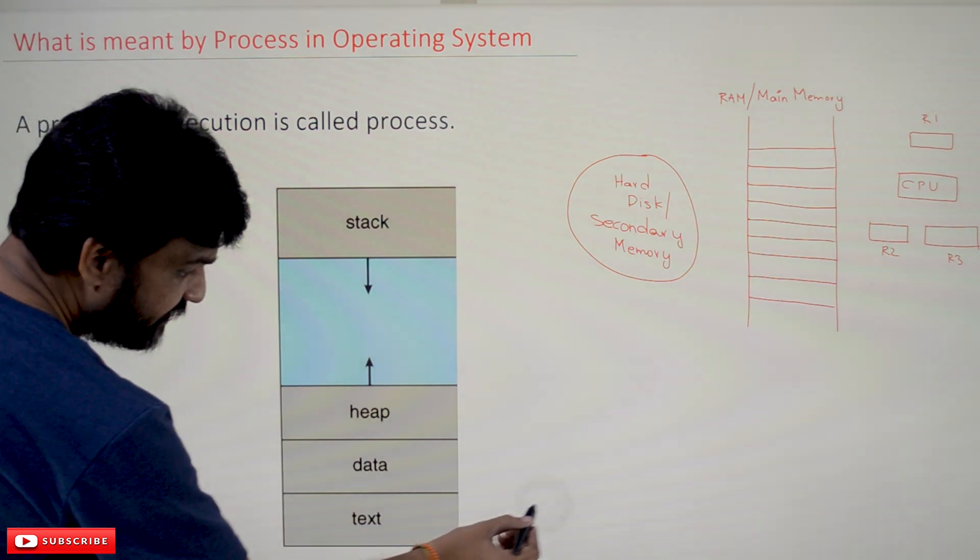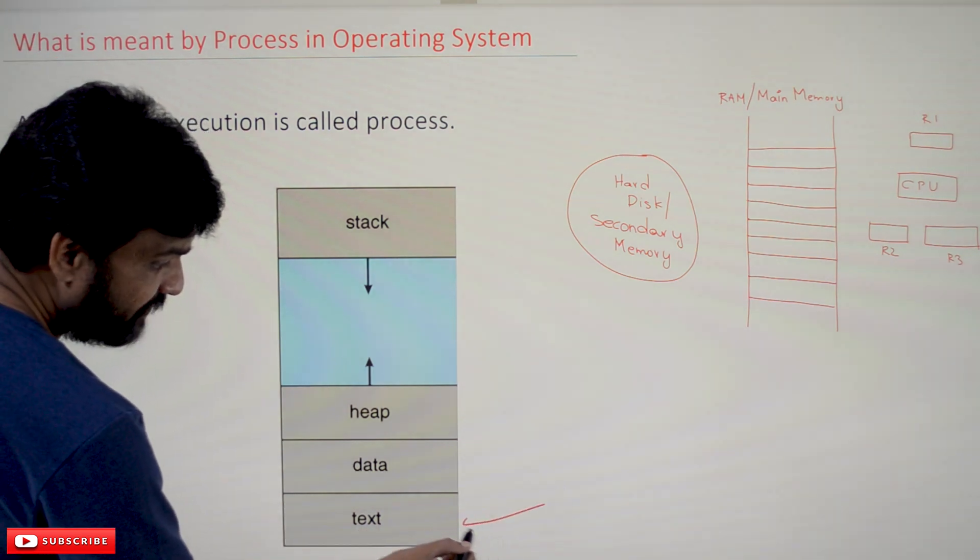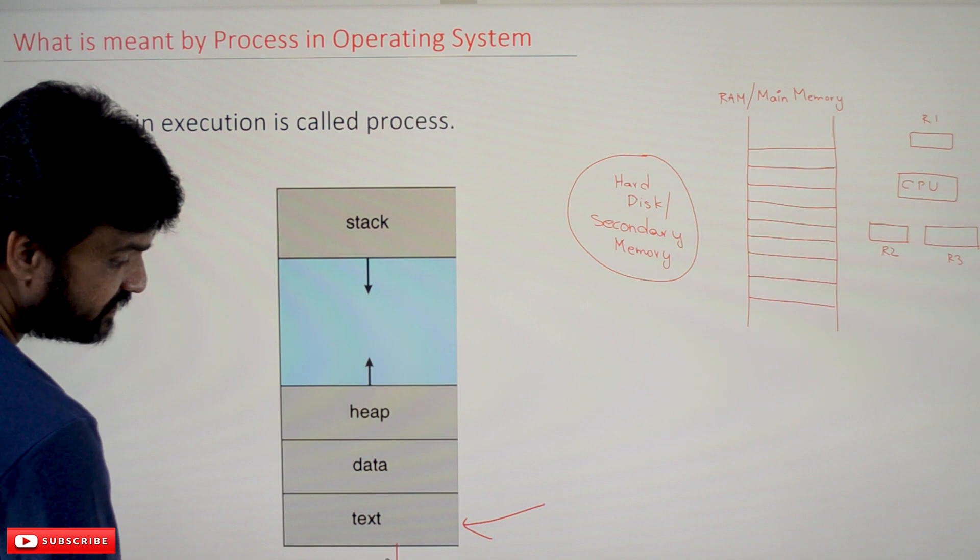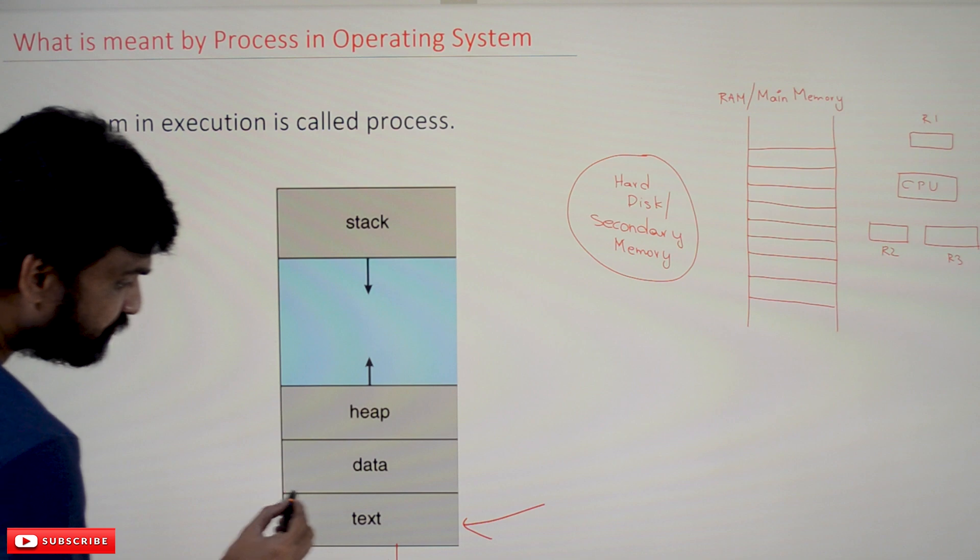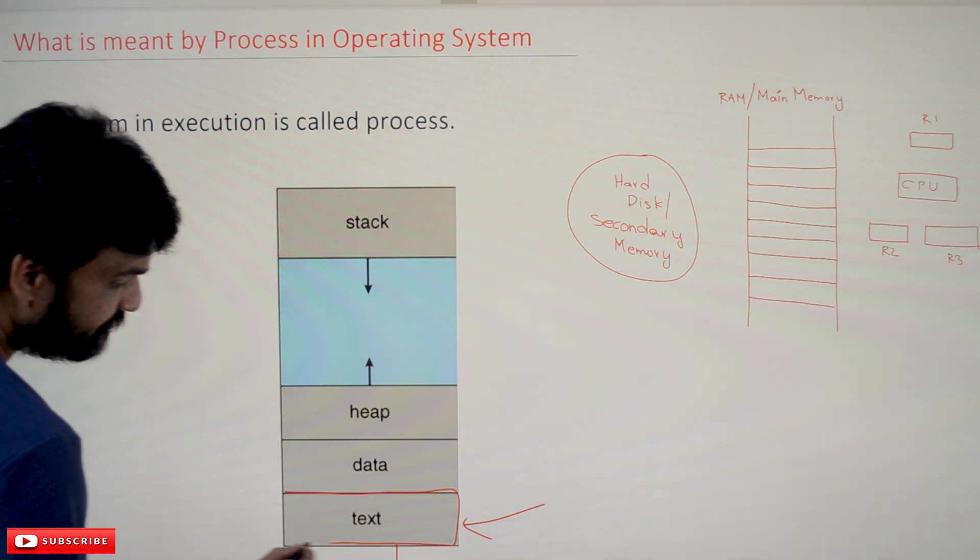In this diagram, we are having the text part. This part is what we call the program in binary code, in zeros and ones. To this program, memory has been allocated.